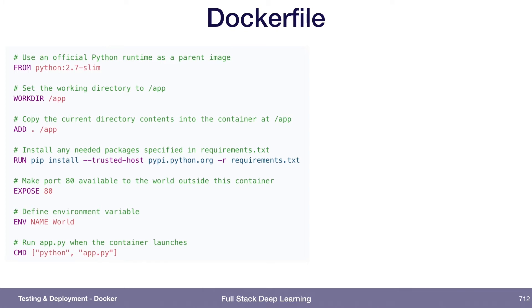The Dockerfile is the way you specify Docker images, and a Docker image is what you use to spin up a Docker container. The Dockerfile starts with some kind of base image — here they start with a Python 2.7 base image. You can set your working directory, add things from your file system onto the Docker image, run commands like pip install for packages, expose ports, set environment variables, and then define a default command that executes when the container spins up.